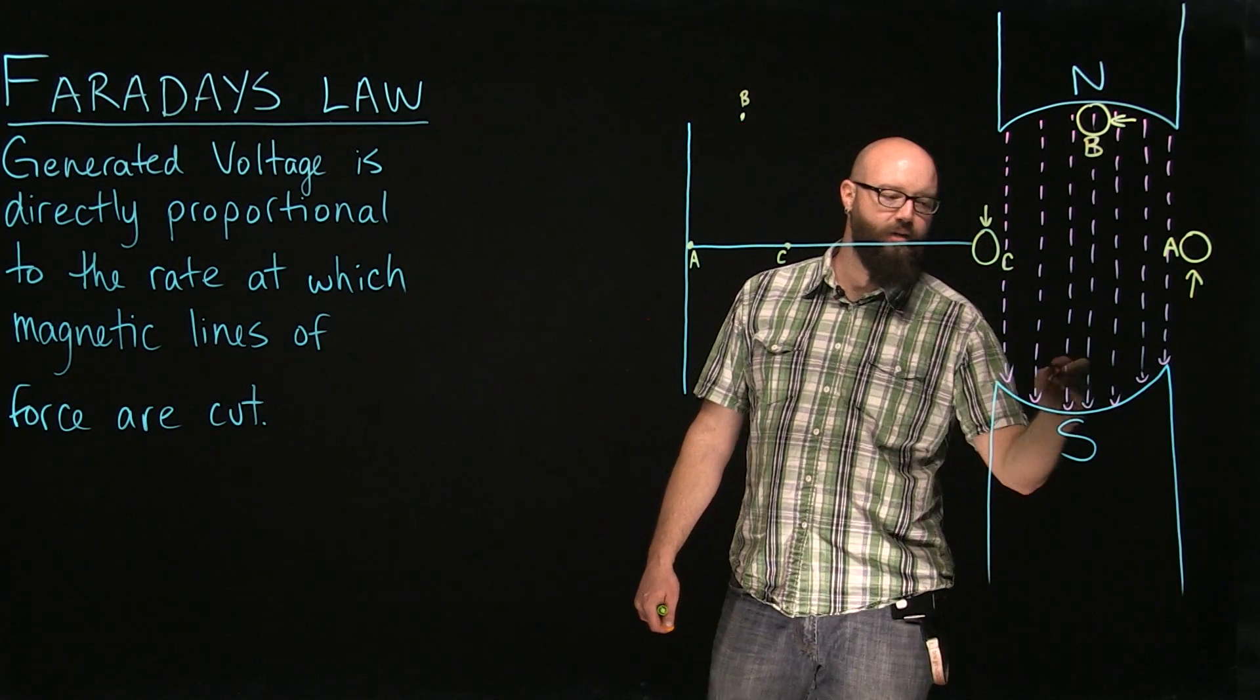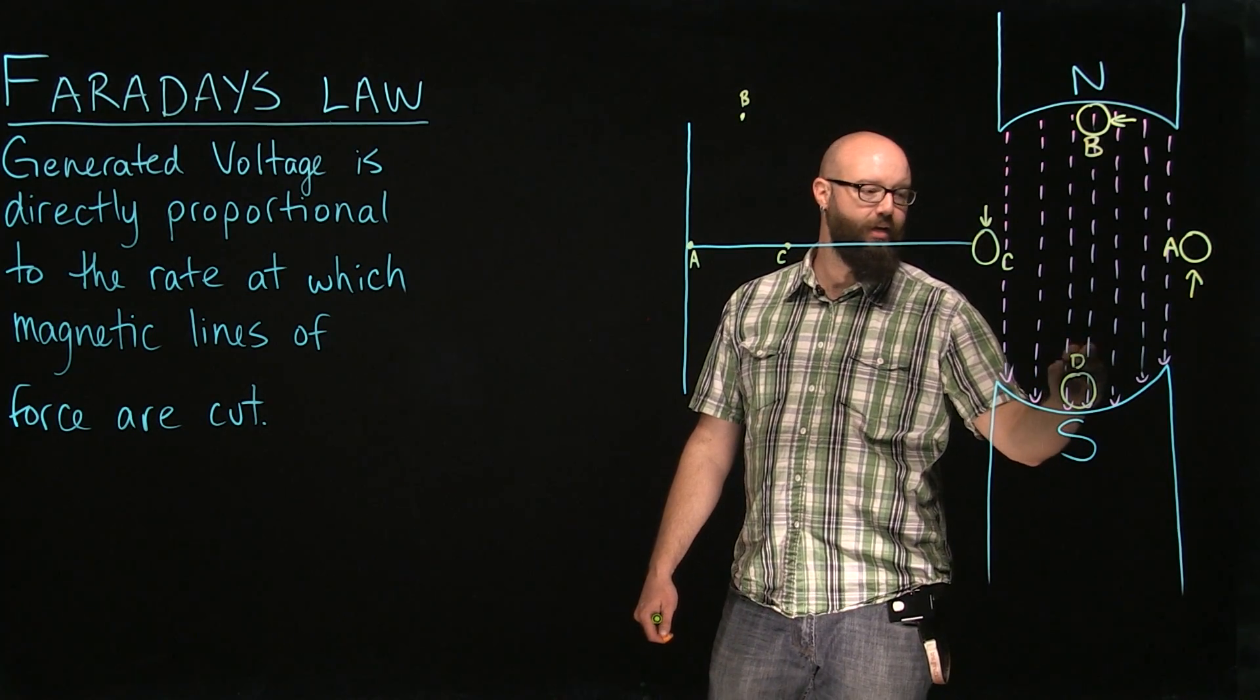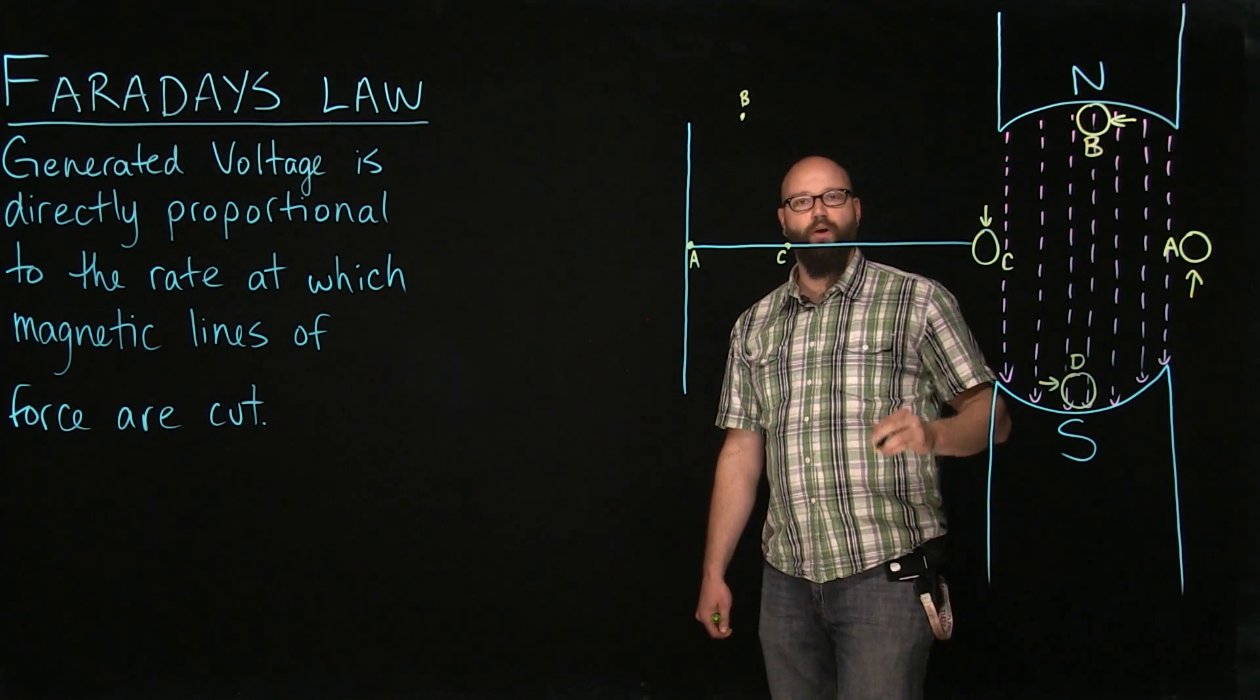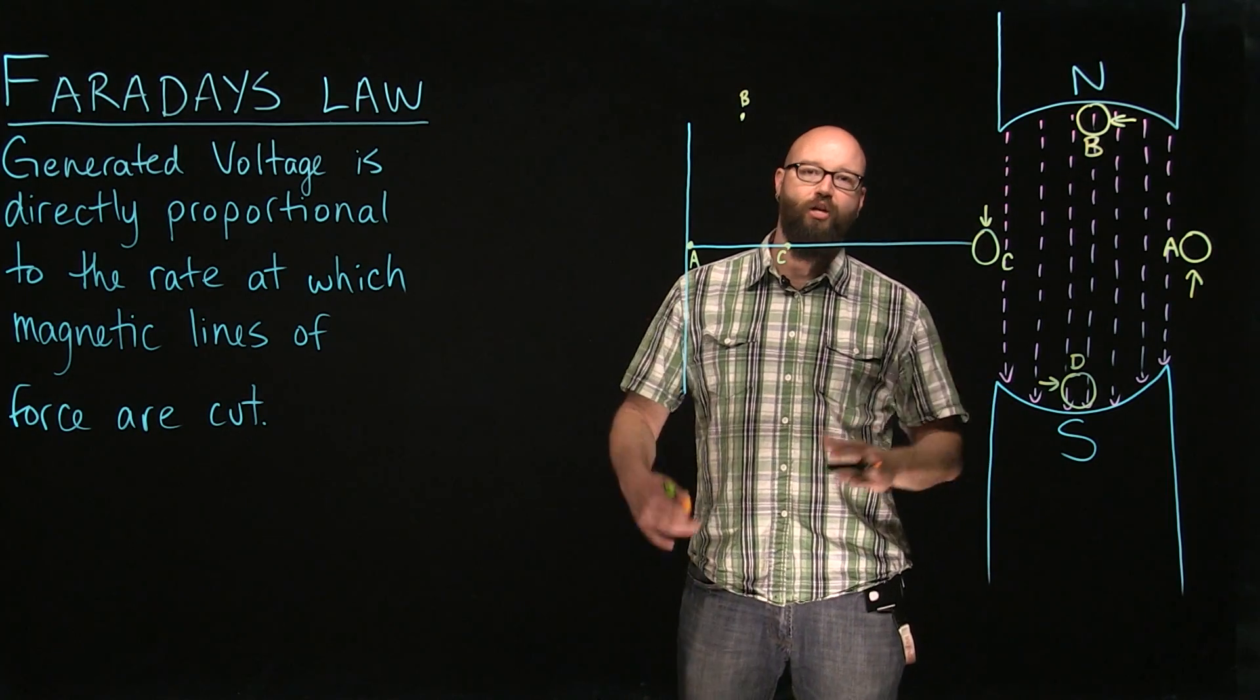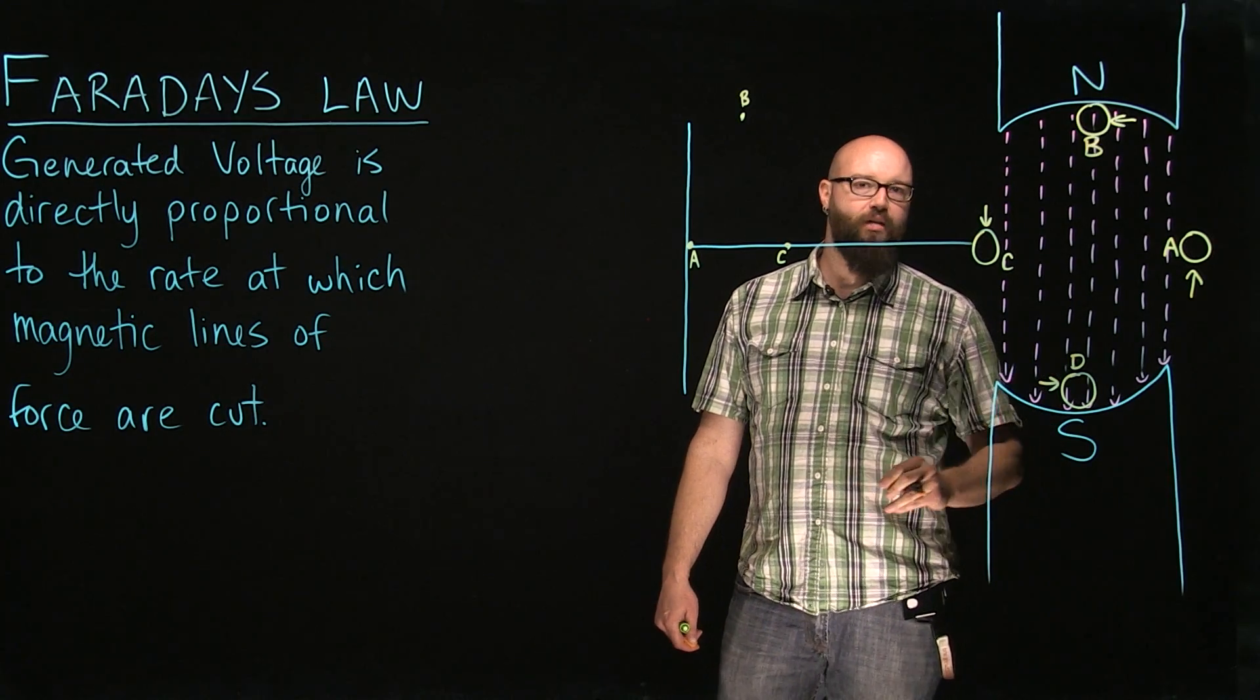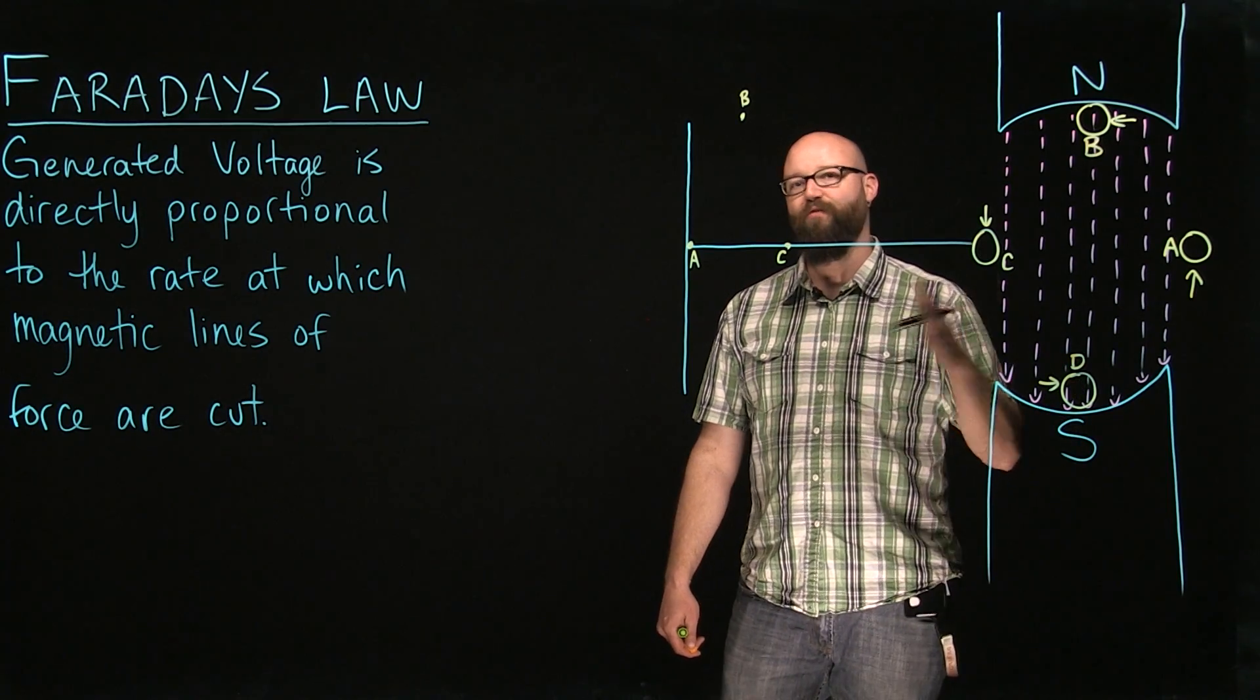And rotate it again, 90 degrees down here. This is going to be our point D. And we're now moving in the opposite direction. Whenever you move a conductor through lines of force, you're going to get a generated voltage. That generated voltage is going to get a current to flow. If you move the conductor the opposite direction through those lines of force, you're going to get an opposite flow of current.